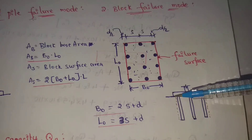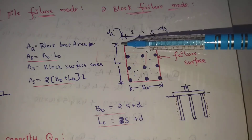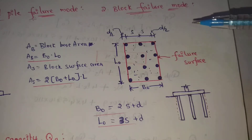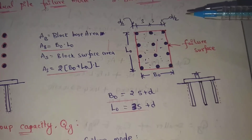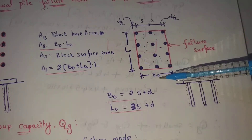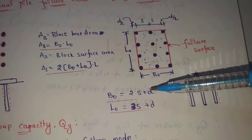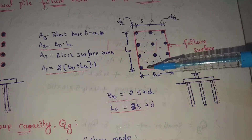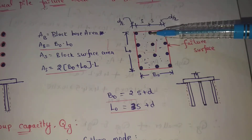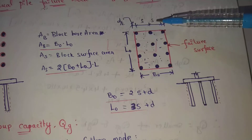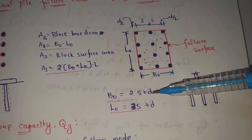Going to all sides — the failure surface is created shown in red color. This is the failure surface. For width: center to center spacing is equal to 2s. Width B0 equals 2s plus d, where d is the pile diameter.